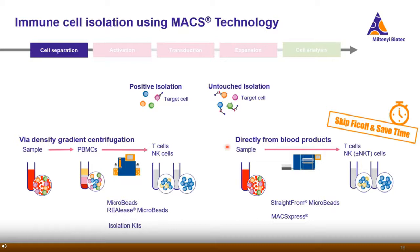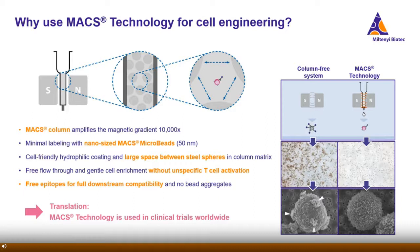The second option is to isolate your cells of interest directly from various blood products — this is a quite new and very straightforward approach. Using the straight-from approach, you can completely skip the time-consuming density gradient centrifugation and isolate, for example, CD4 and CD8 T cells from a buffy coat within only 30 minutes. Independent of the approach you decide on, the basis is always MACS technology.